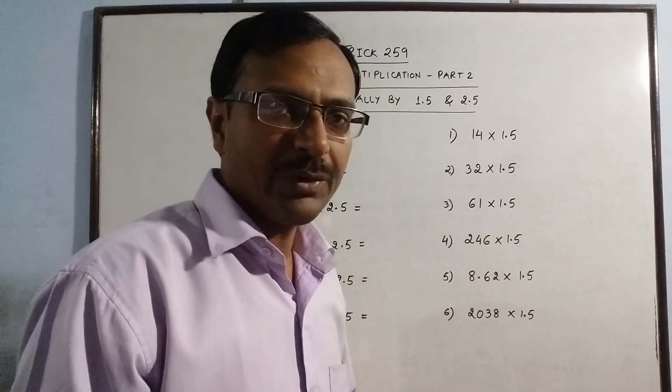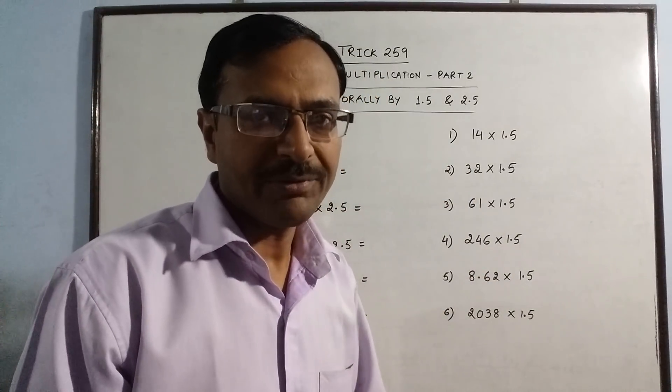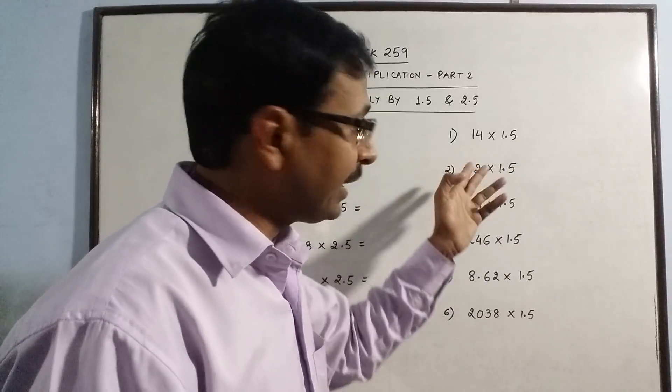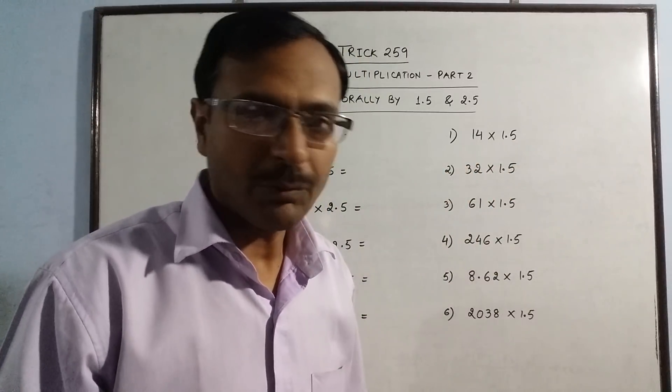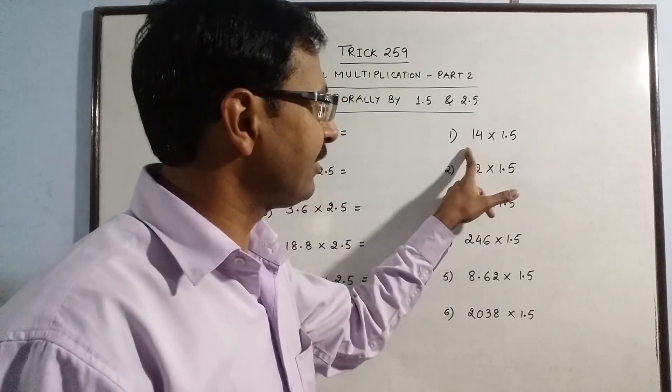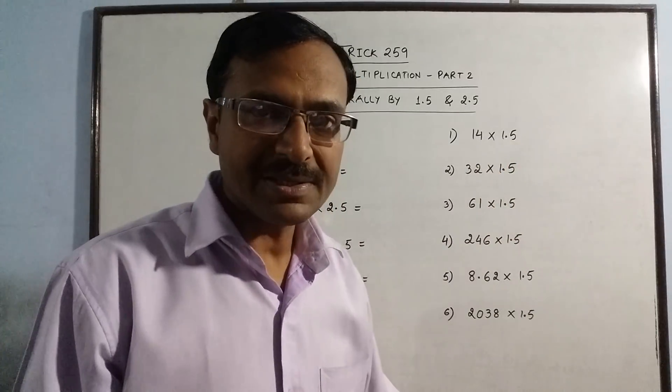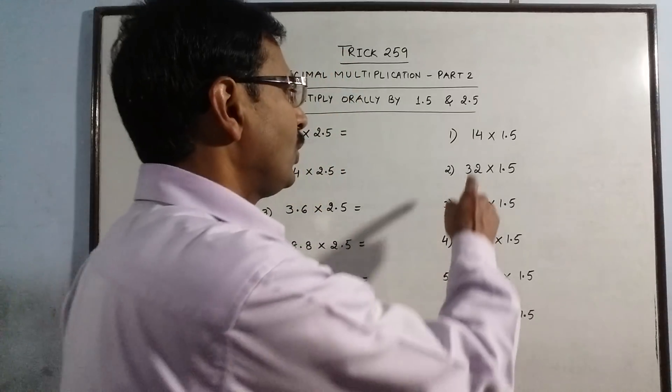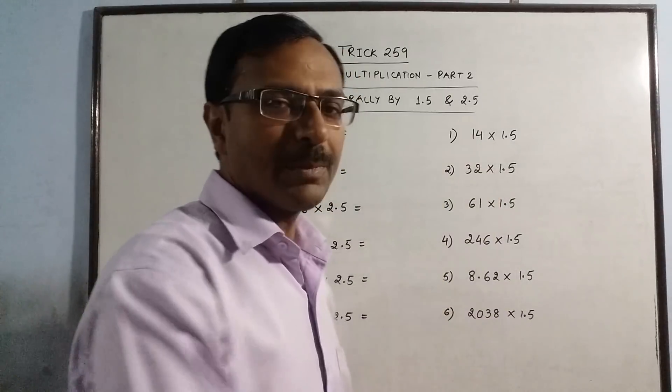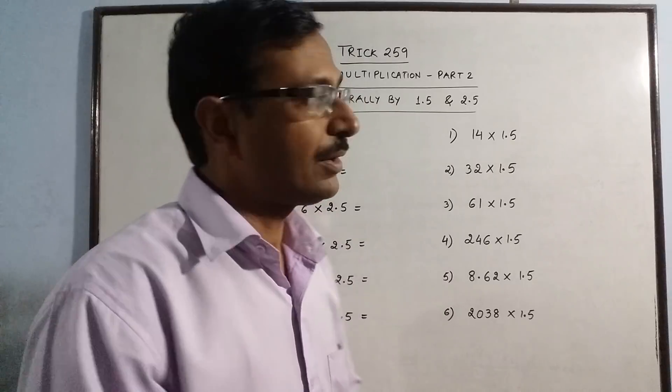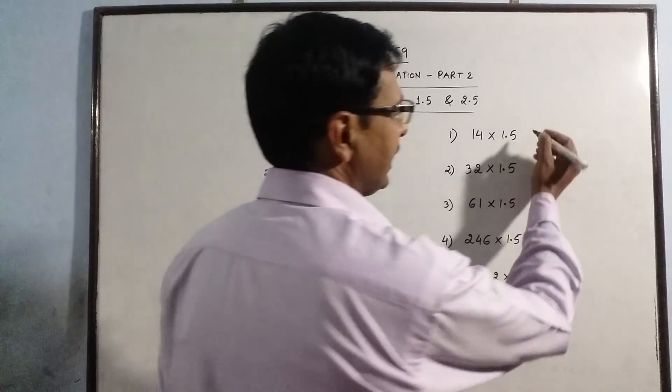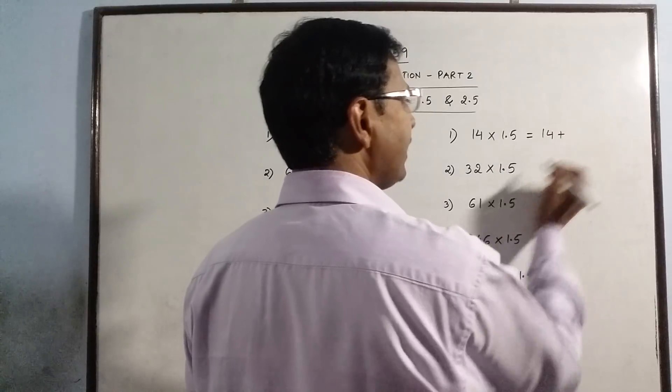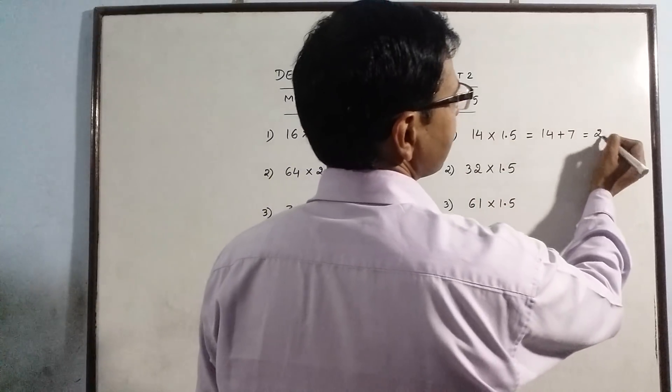First, we understand how we can multiply numbers by 1.5. Now see, 1.5 is actually 1 and 0.5. 1 means the number itself and 0.5 means half of the number. So if you know half of this number, then whatever is left is very easy. Just take this number and add half of this number, you get your answer.